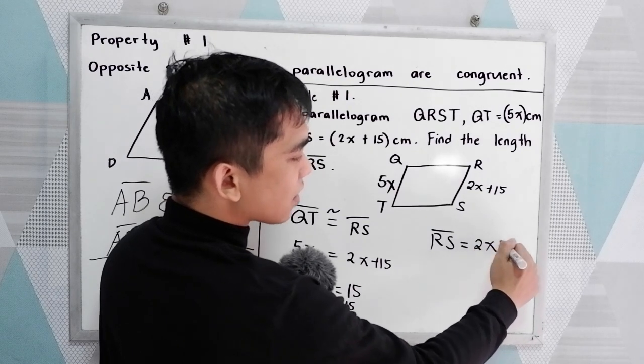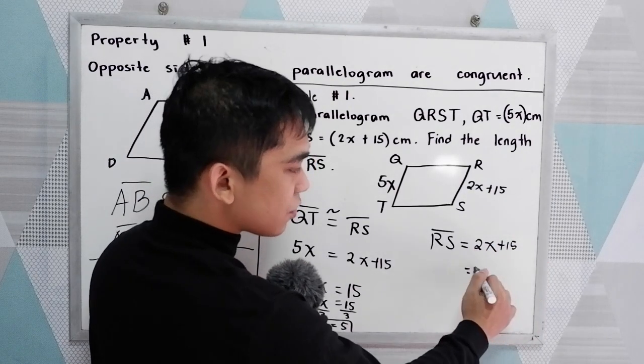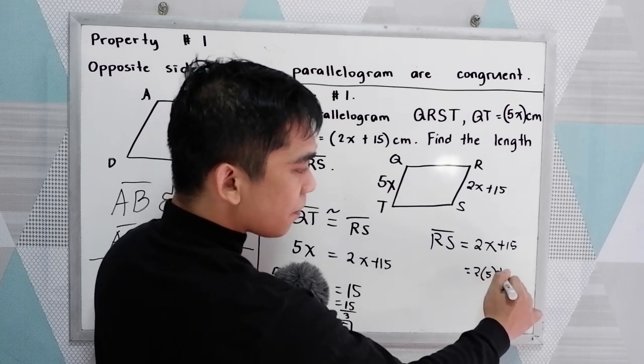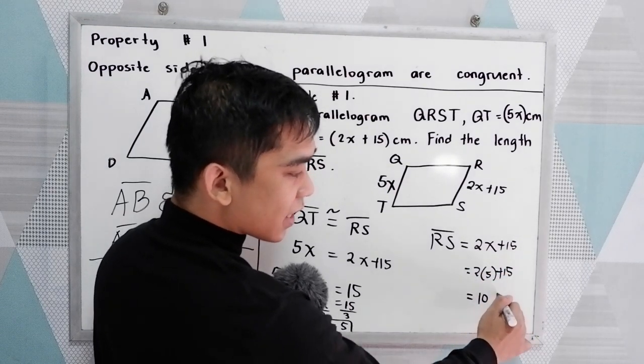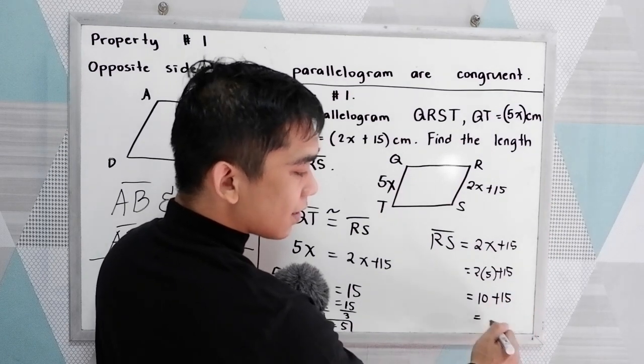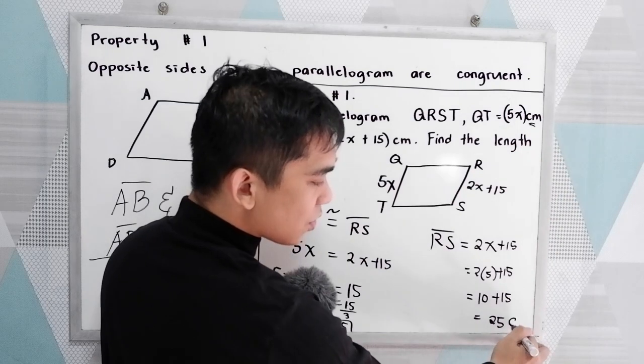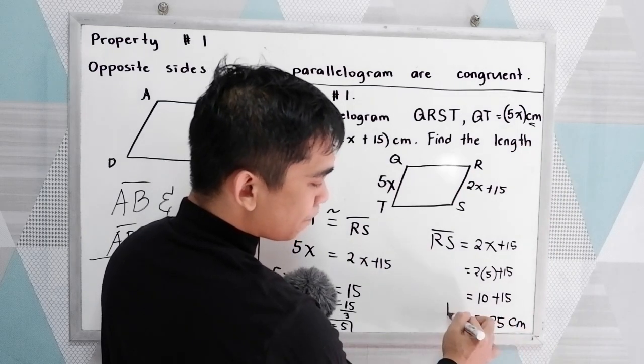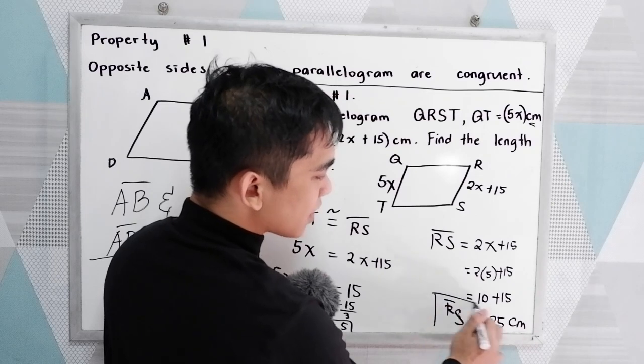Segment RS, that is 2x plus 15. All you need to do is substitute the value of x. That is 5. So 2 times 5 plus 15. 2 times 5, that is 10 plus 15. That will give us 25. The unit is cm. So we need to write cm. Segment RS is 25.